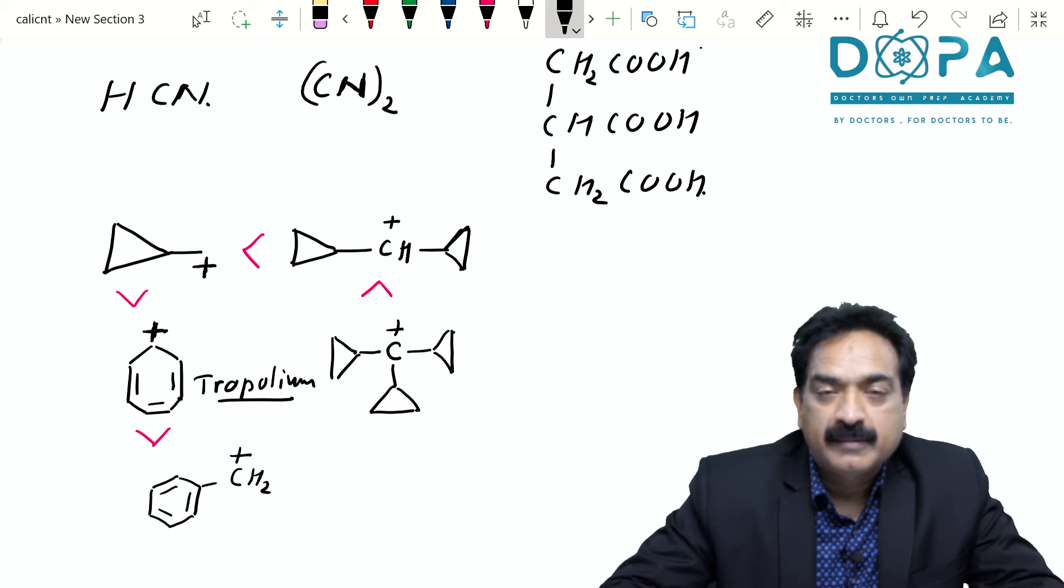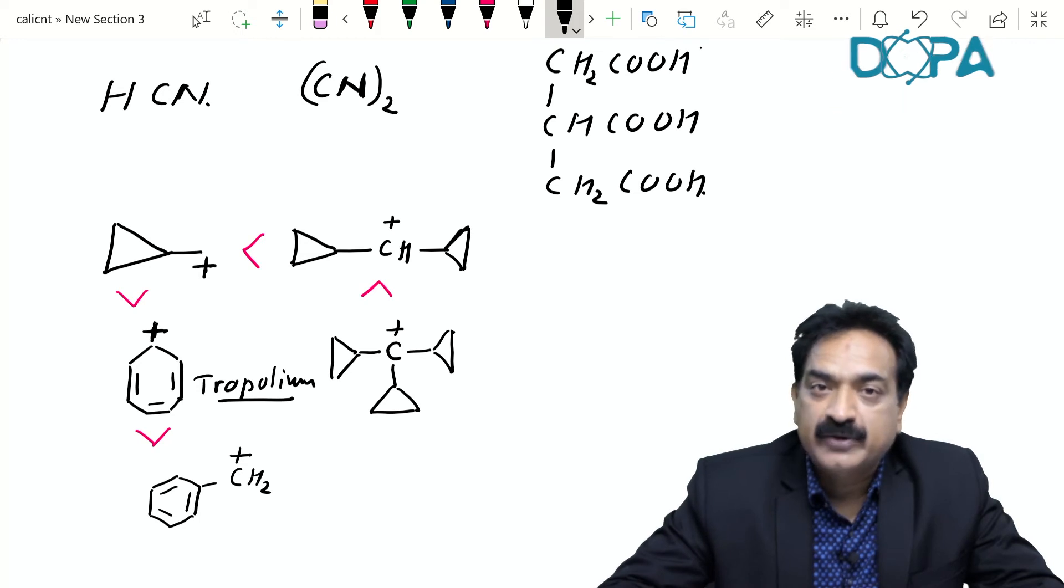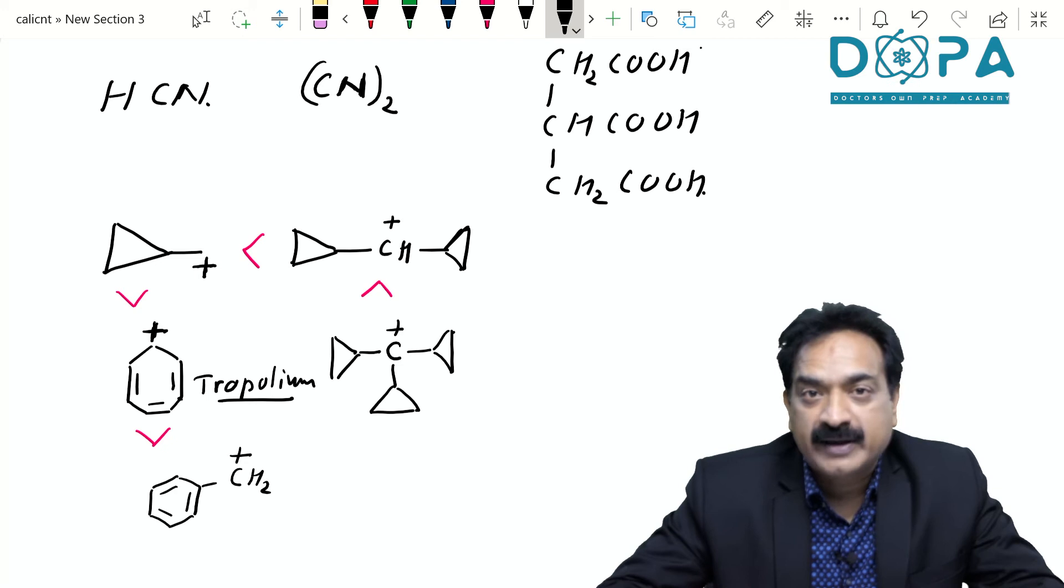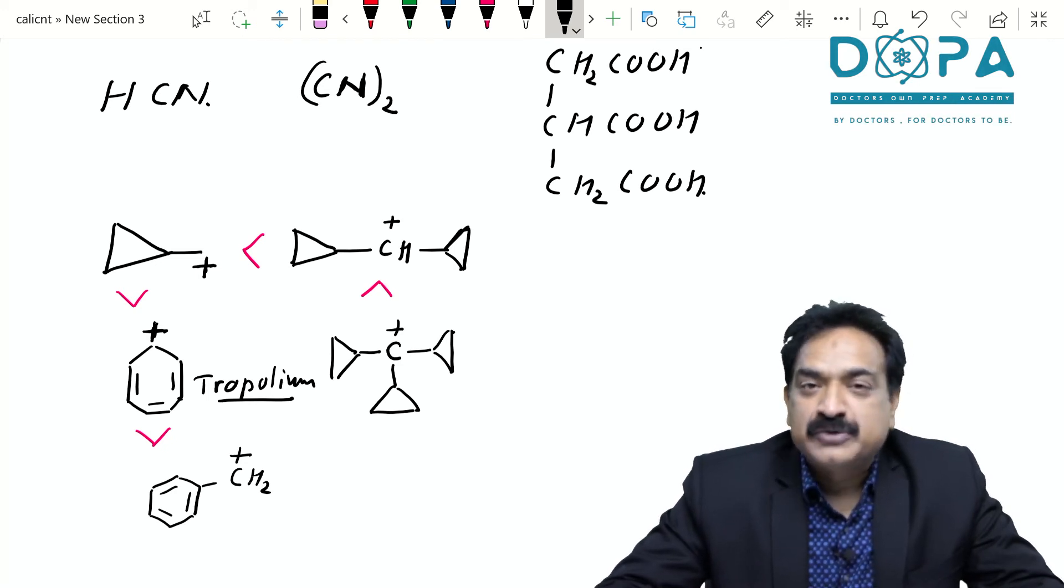So this cyclopropyl methyl carbocation is one of the most stable carbocations. If you increase cyclopropyl groups, stability goes on increasing, and these systems are even more stable than aromatic systems. All right, please do join us.